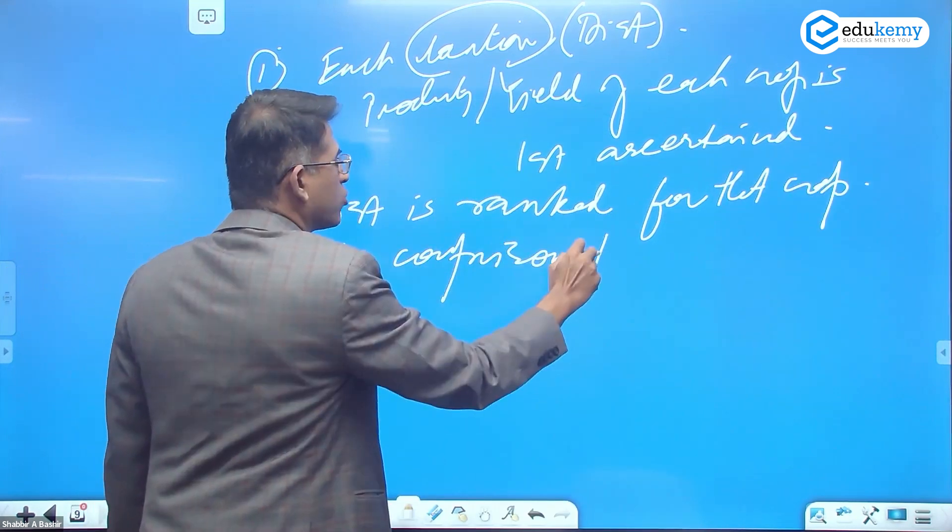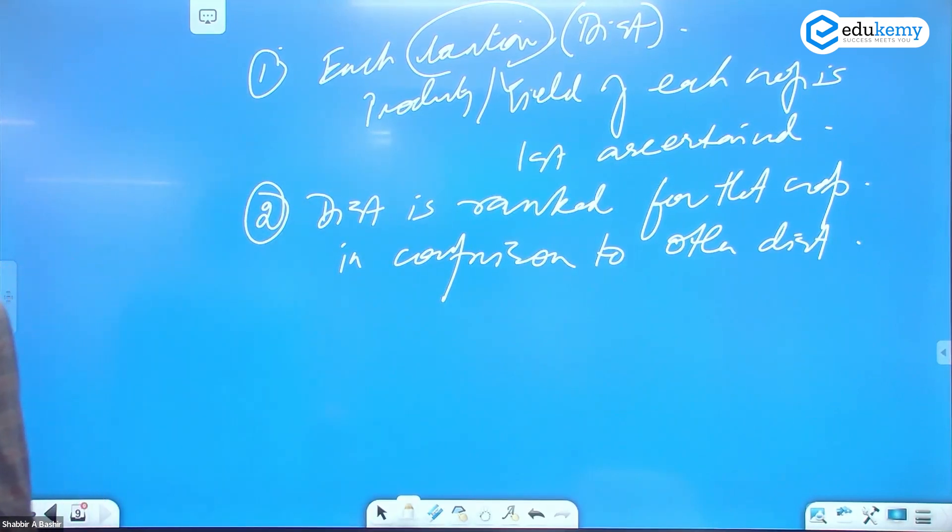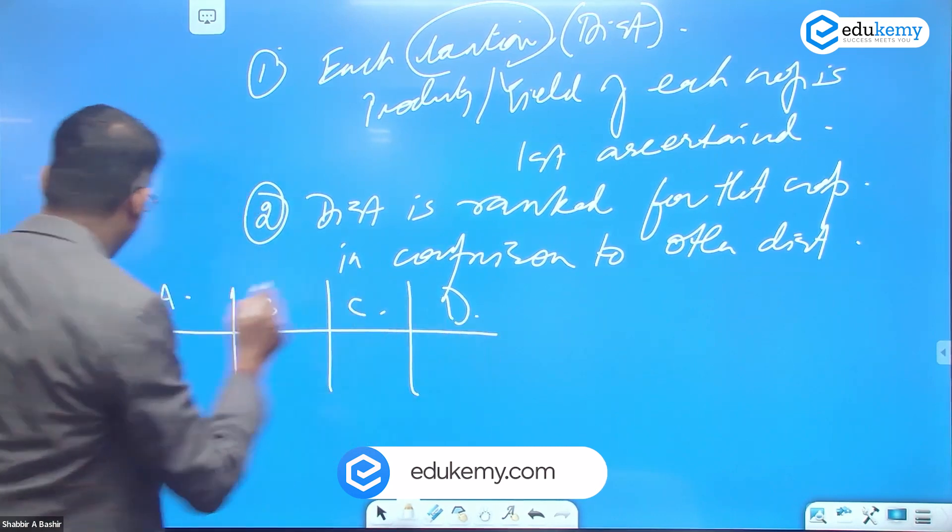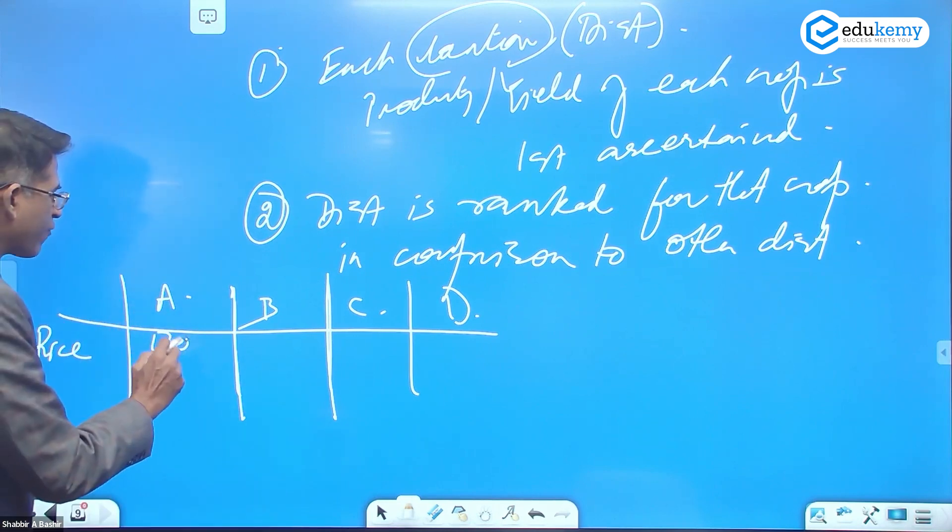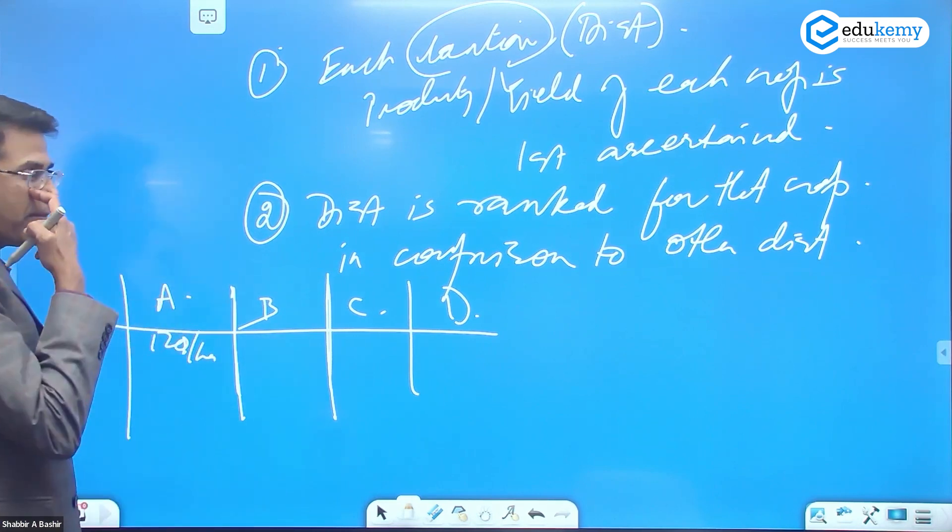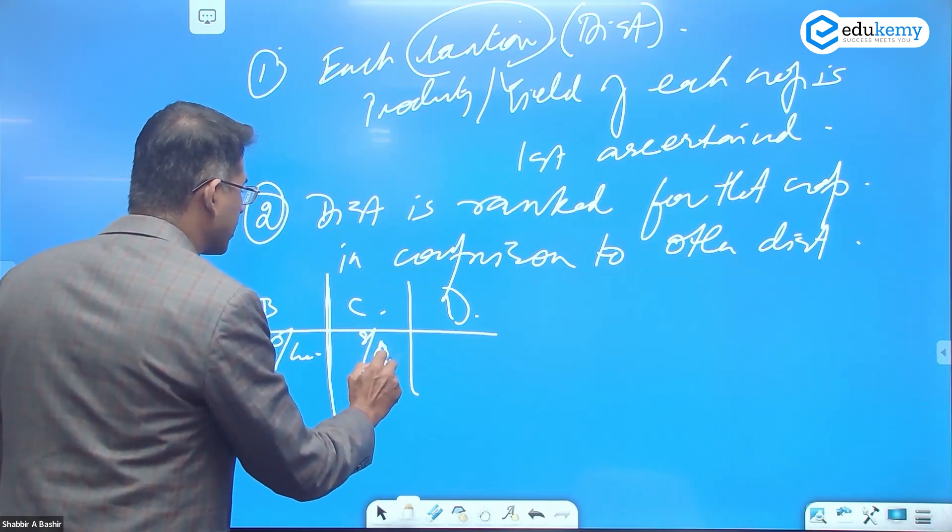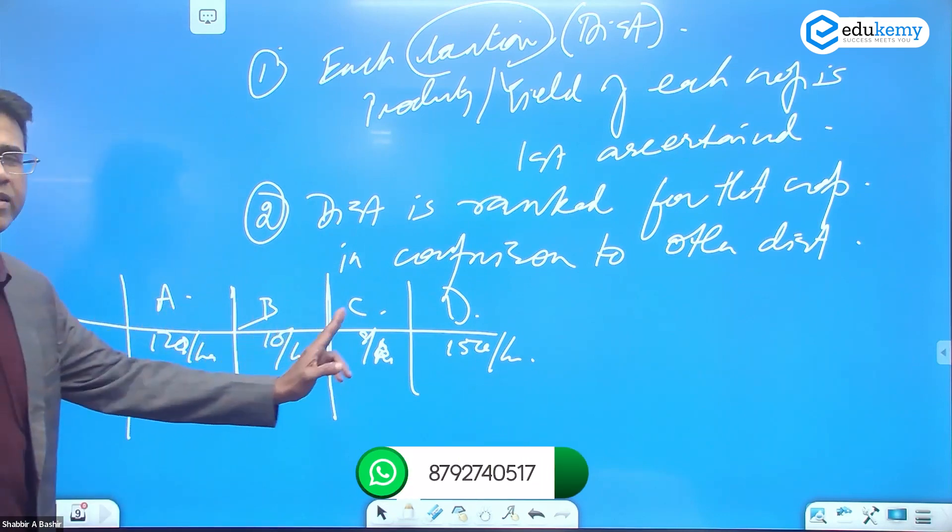Number two, the district is ranked for that crop in comparison to other districts. What I mean by this is: district A, district B, district C, and D. I have the crop called rice. For each district I will find out the productivity or yield. Say A has 12 quintals per hectare, B has 10 quintals per hectare, C has 8 quintals per hectare, and D has 15 quintals per hectare. For each district I found out the productivity.